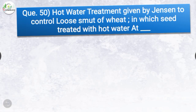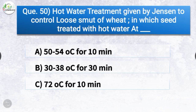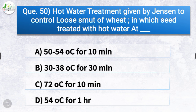Question number fifty: Hot water treatment given by Jensen to control loose smut of wheat — in which seeds are treated with hot water at dash. The options are 50 to 54 degree Celsius for 10 minutes, 30 to 38 degree Celsius for 30 minutes, 72 degree Celsius for 10 minutes, or 54 degree Celsius for 1 hour. The correct answer is option A, 50 to 54 degree Celsius for 10 minutes.